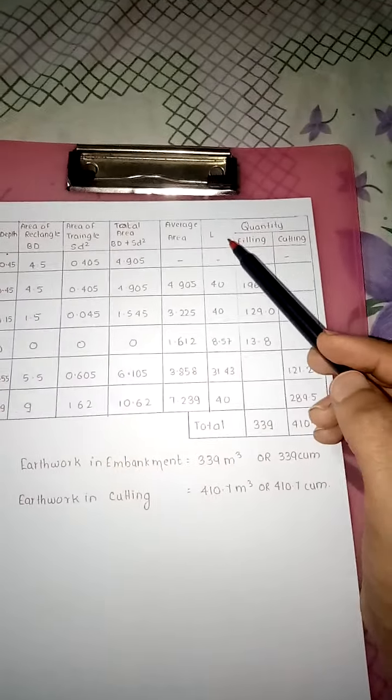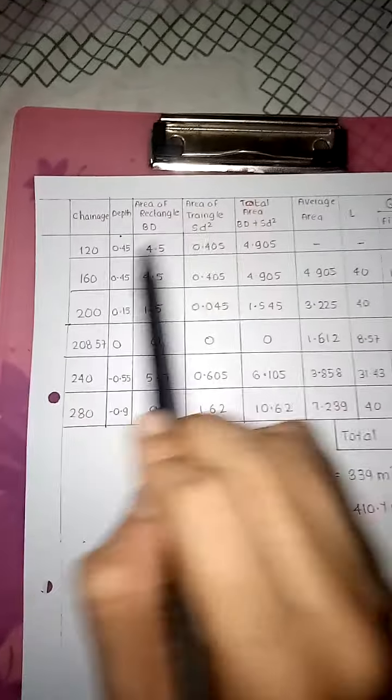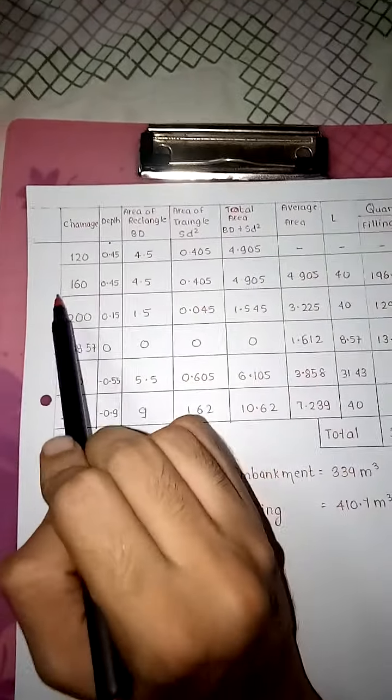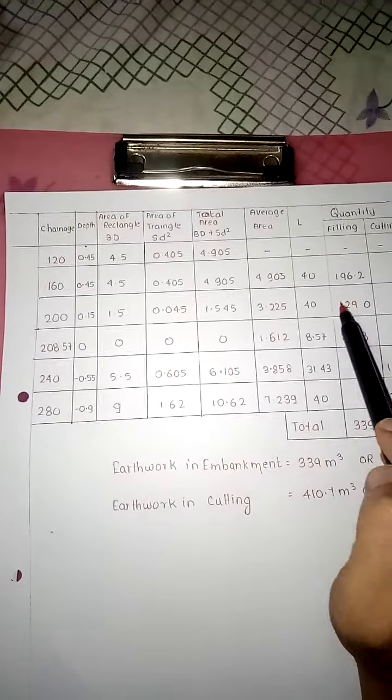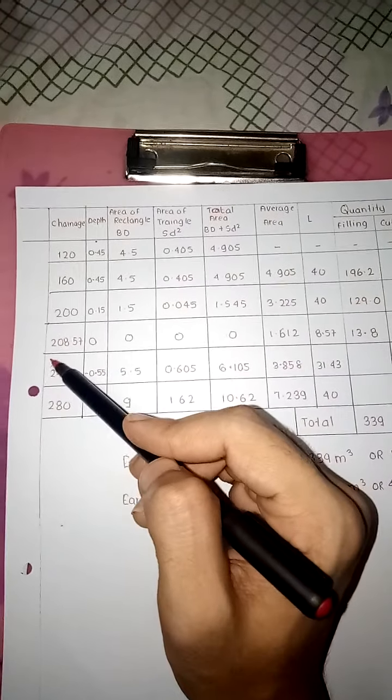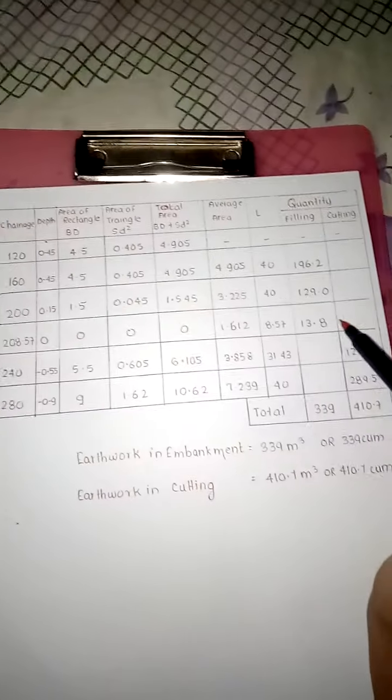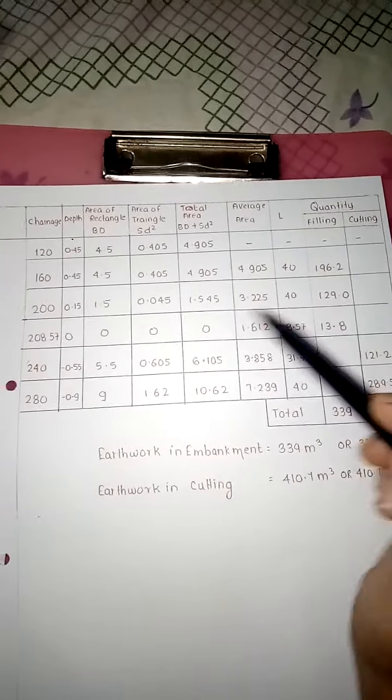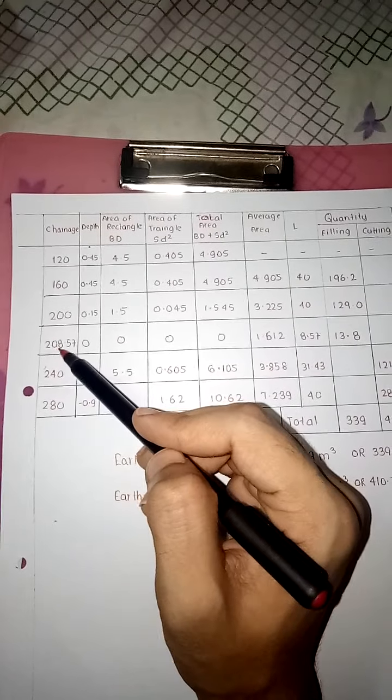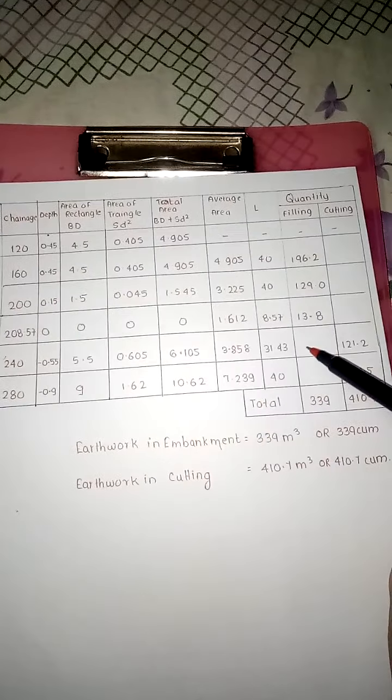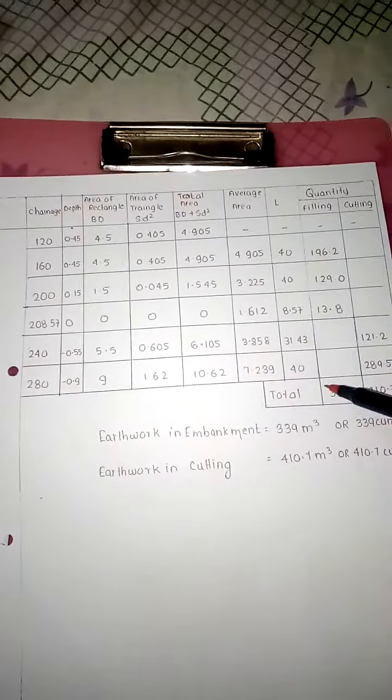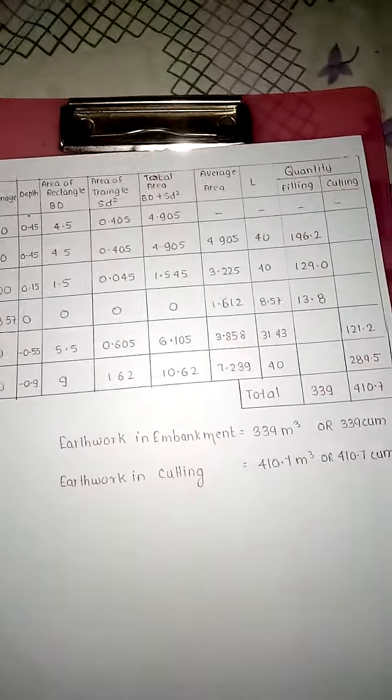Now take length. How to find length? We have 120 to 160, difference between them is 40. Then 160 to 200, difference is 40. Then 200 to 208.57, difference is 8.57. Then 240 minus 208.57, difference is 31.43. Then 240 to 280 is 40.